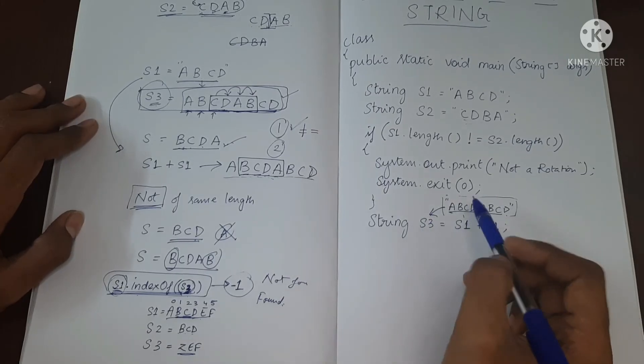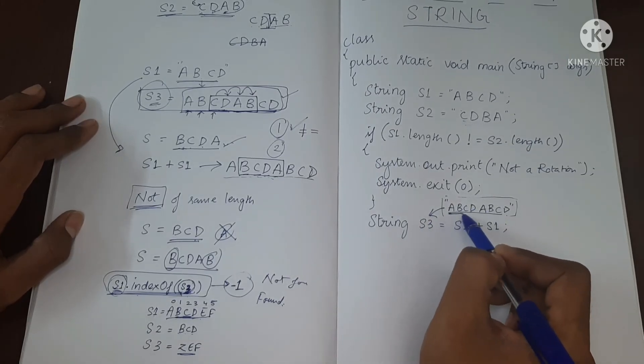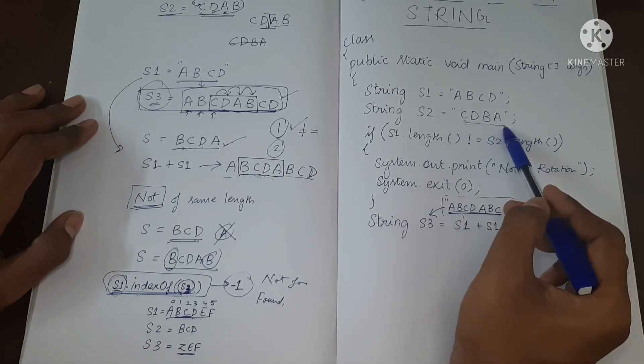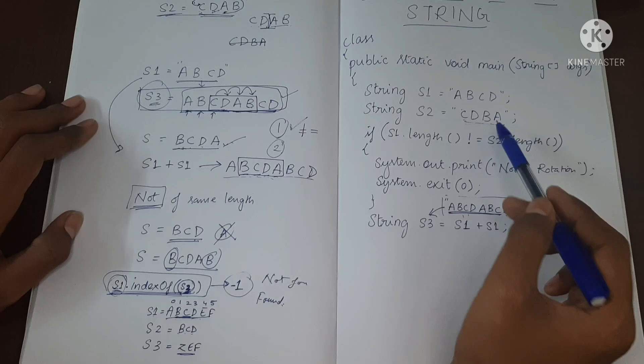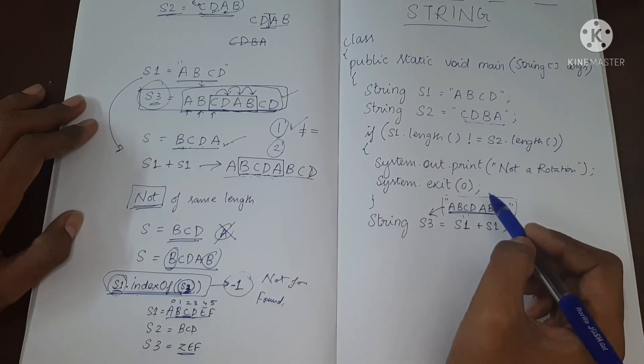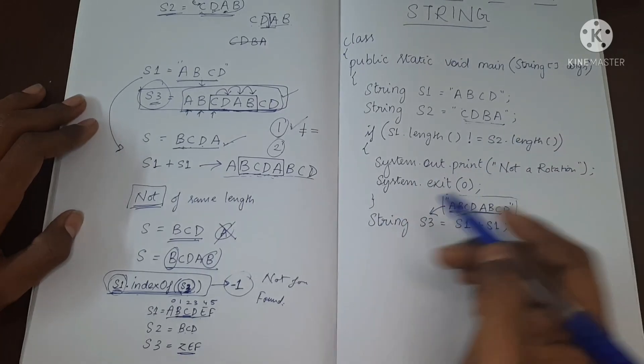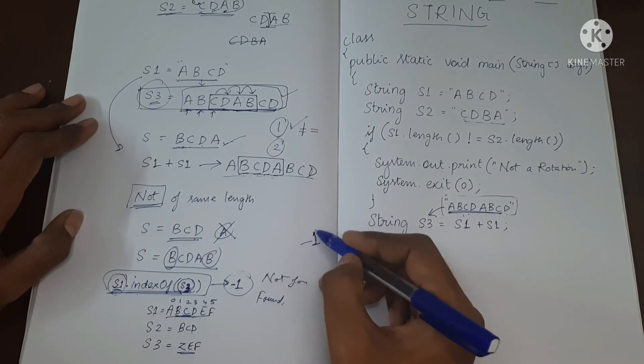So according to my logic, we have to check if this S3 has S2. If it is having it, then it will give us some index value. If it is not having it, it will return minus one.